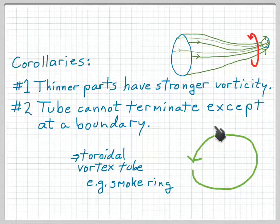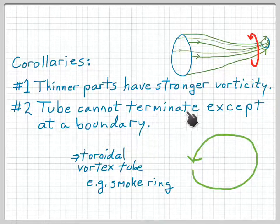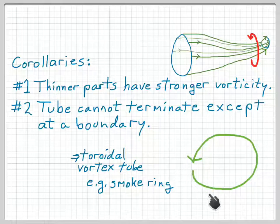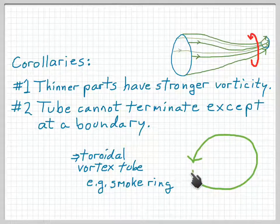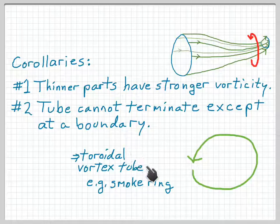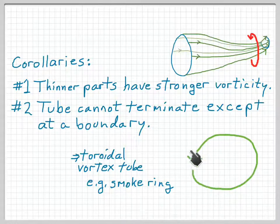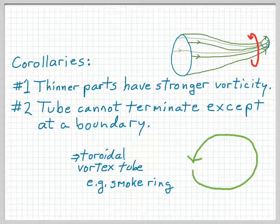The second corollary is that a vortex tube cannot terminate except at a boundary. It can't peter out in the middle of the fluid because its circulation can't change — it can't just go to zero somewhere, as you'd expect at the end of a vortex tube. So a vortex tube can only terminate at a boundary, or within the flow it can loop around itself to make a closed circuit — a toroidal vortex tube — a familiar example of which is a smoke ring. Those are the corollaries of Helmholtz's second theorem.